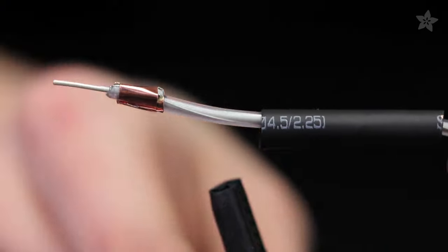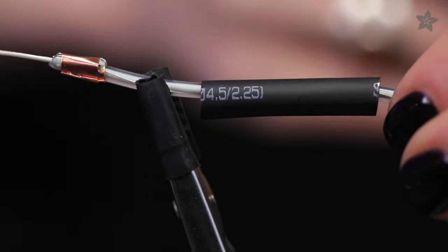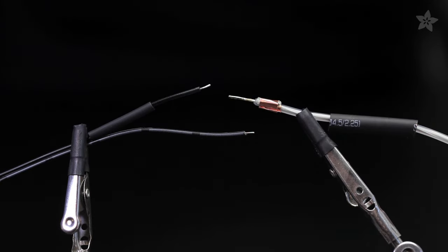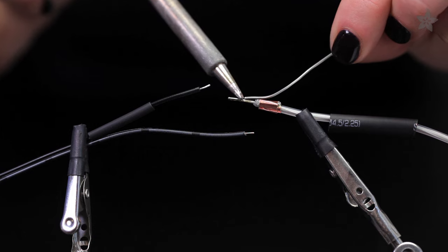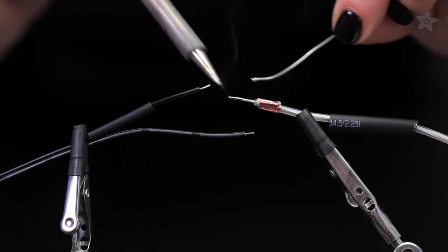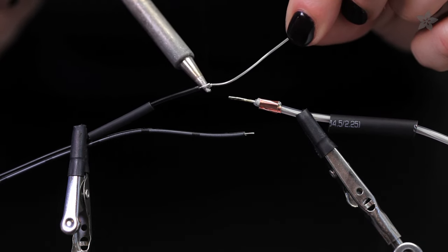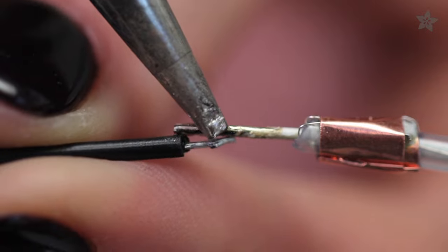Place a larger piece of heat shrink tubing over the EL wire, then a smaller diameter piece over the short wire we're about to solder. Tin the EL's center wire and the connector's short end with a little bit of solder. Then reheat them together to make the connection.